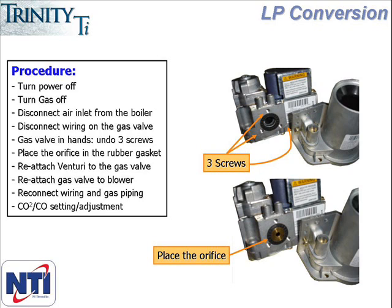This will allow you to remove the venturi from the gas valve and you will see a rubber gasket. Place the orifice in the rubber gasket and, taking care to make sure the gasket is properly placed, reattach the venturi with the three screws you previously removed.